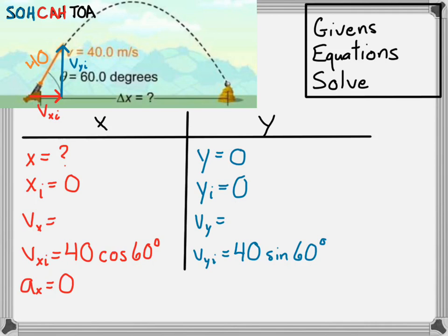Acceleration in the y direction is due to gravity alone, so ay equals negative g, or negative 9.8 meters per second squared. The one variable both components share is time, but we don't know anything about time, so we leave that blank. We have all our givens identified, with a few blanks. Now we move on to the equation step — figuring out which equations apply to this problem.